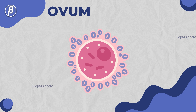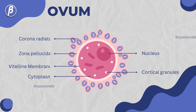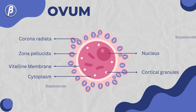The egg cell contains the nucleus, cytoplasm, zona pellucida, and corona radiata. Ova is the largest human cell, with a radius of up to 0.1 mm.